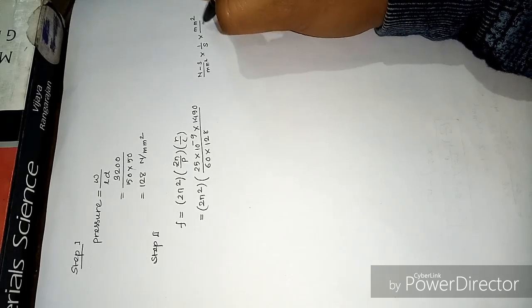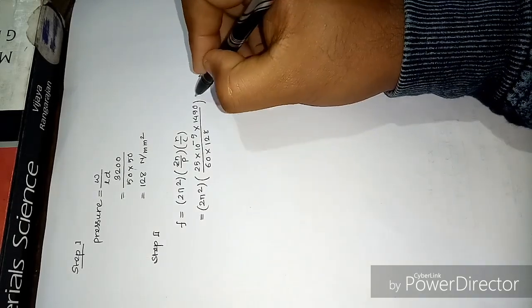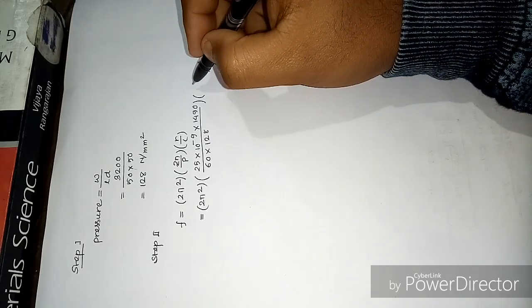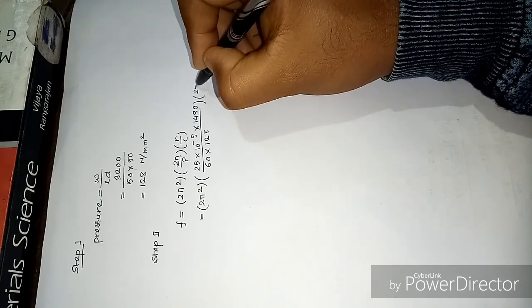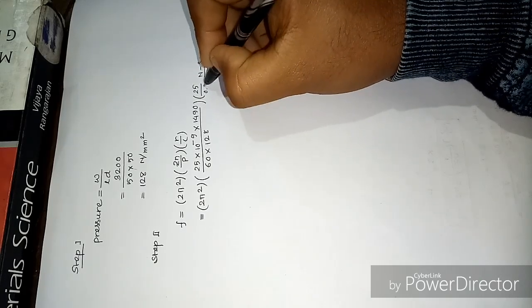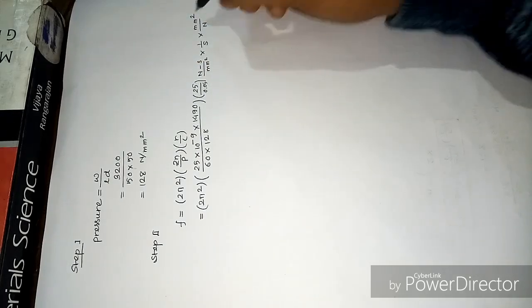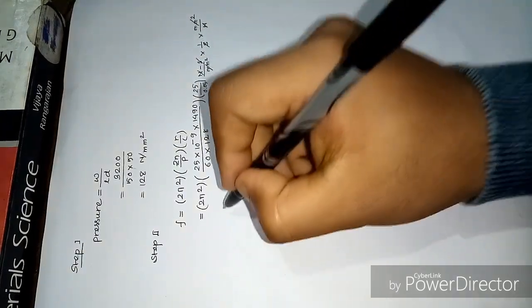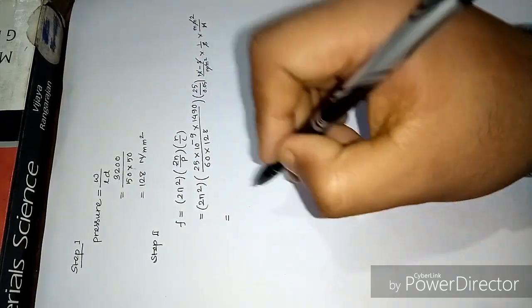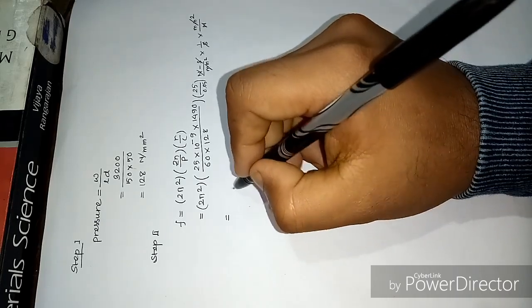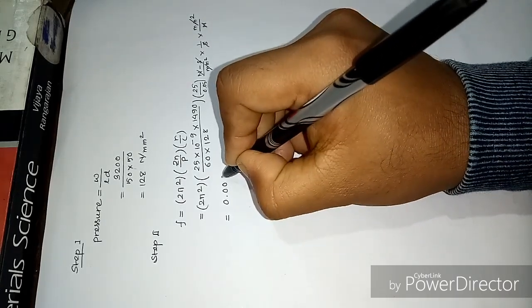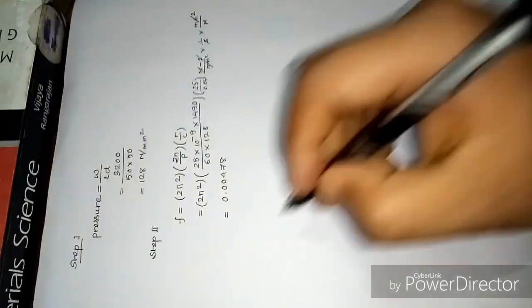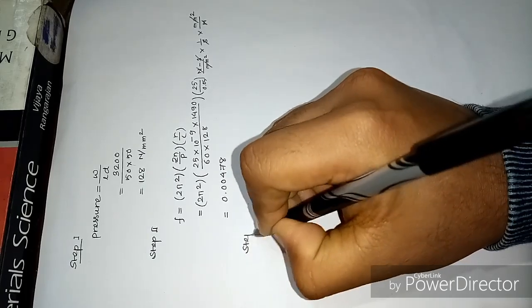We have the R by C ratio: R is 25 mm and C is 0.05, so this is unitless. All units will cancel and we will get a value of 0.00478.